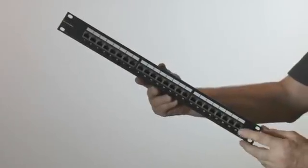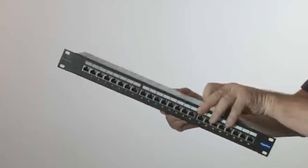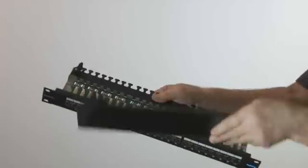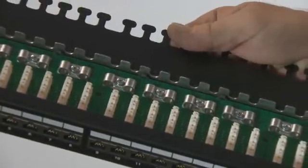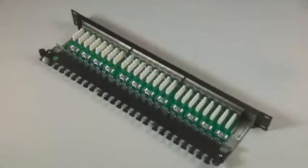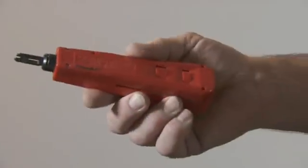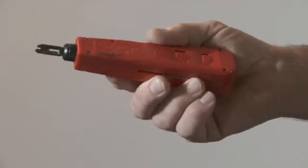This is the Brandrex Giga Plus Cat 5e shielded patch panel, 24 port, complete with cable management at the rear. Remove the cover plate to expose the termination blocks. We recommend the use of a high-impact punchdown tool for insertion of the cable cores into the IDCs.